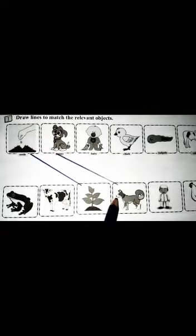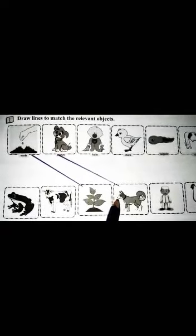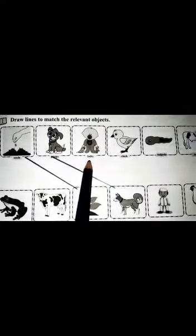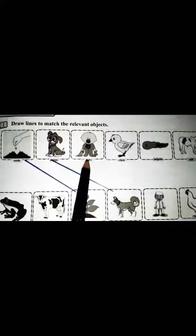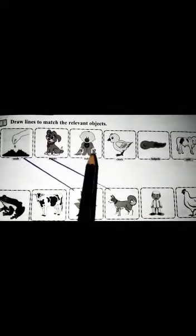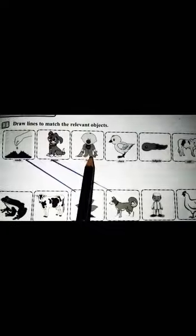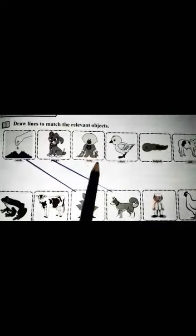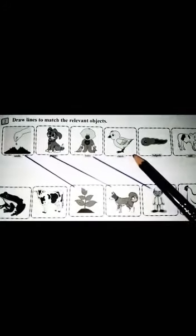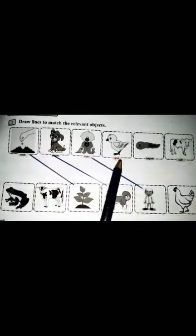The third picture is baby, and the relevant picture of baby is boy. Because baby becomes boy. So match baby with boy. The next picture is chick. Chick grows into hen. So match chick with hen.